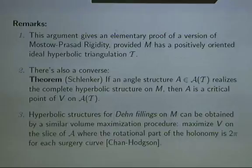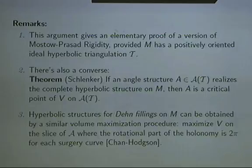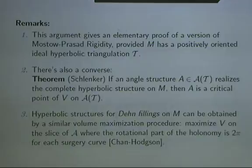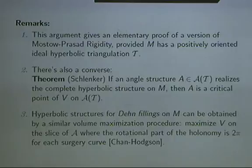So what do you get out from this argument? Well, one of the things you get is a kind of version of rigidity. If you start off with an ideal triangulation and get a positively oriented solution, then this volume maximization argument shows there's actually a unique solution giving the maximum volume — a unique solution giving you the complete hyperbolic structure. So this is a weak version of Mostow rigidity, and you get it very directly from the concavity of this volume function.